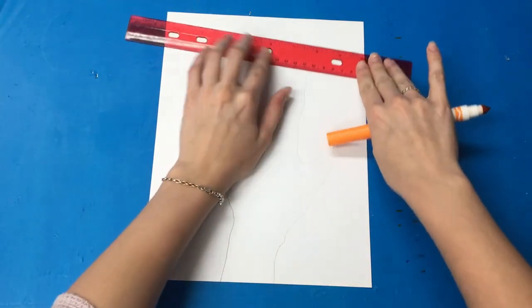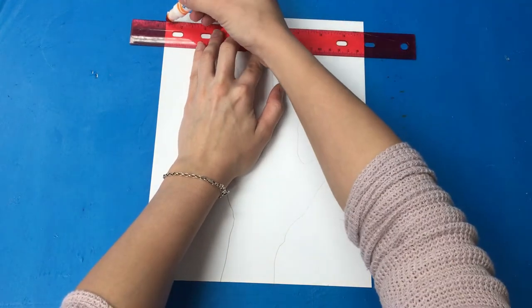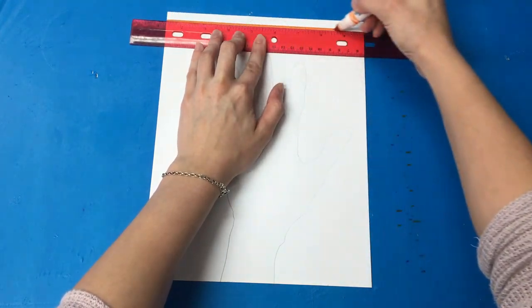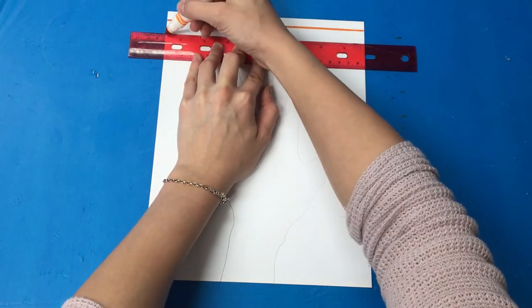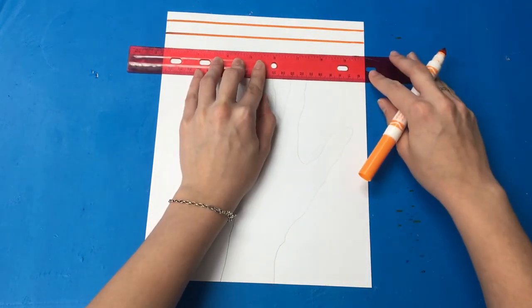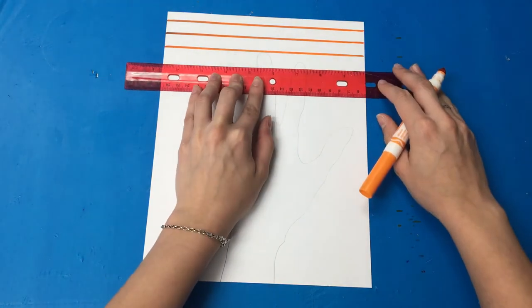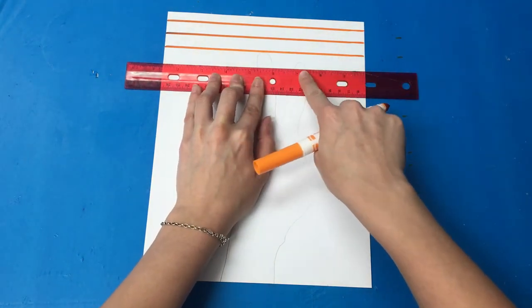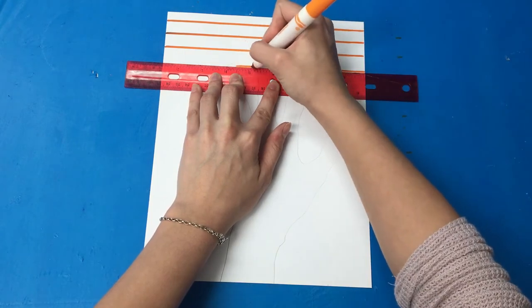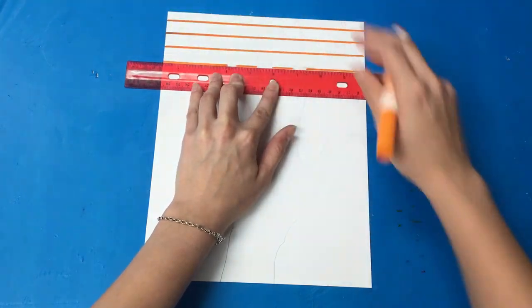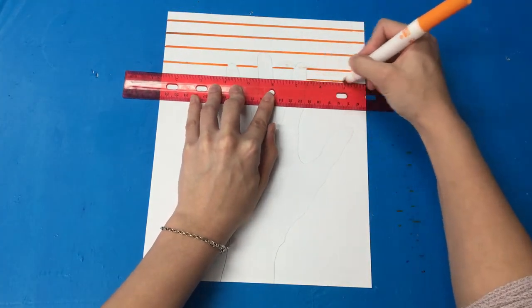You will then take your straight edge and make straight lines only in the background. The background is everywhere around your hand outline. Make sure you don't make straight lines within your hand outline.